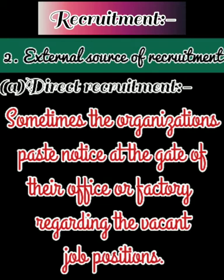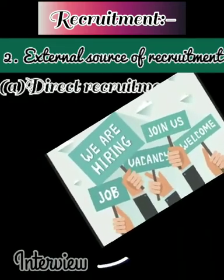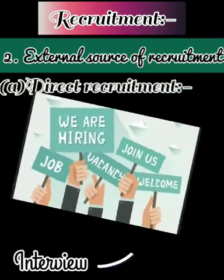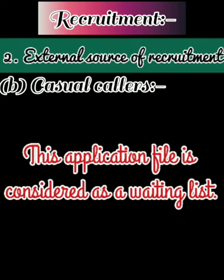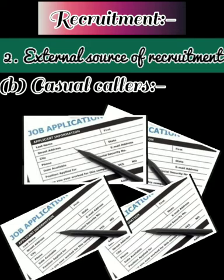The first method of external recruitment is direct recruitment. Sometimes organizations post a notice at the gate of their office or factory regarding the vacant job positions. People who are interested walk in for the interview. This is called direct recruitment because the company is directly inviting candidates to apply. The second method is casual callers. Large organizations maintain a file of applications from candidates who want a job, considered as a waiting list. As soon as a job position gets vacant, they open that file and suitable candidates from the waiting list are called.